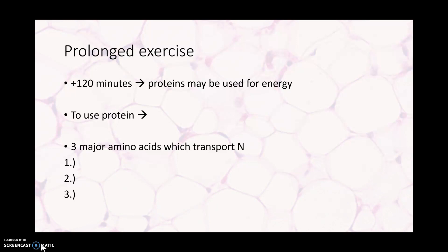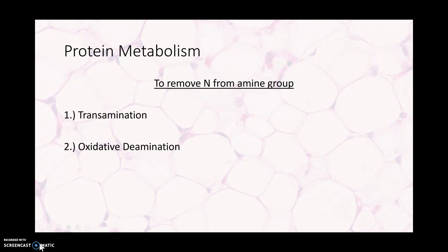In order to use protein as a substrate, the nitrogen must first be removed. The three major amino acids that transport nitrogen are glutamine, glutamate, and alanine. Cortisol also stimulates protein breakdown. The amino acid will be broken down into a carbon skeleton and an amine group containing that nitrogen. We can then use that carbon skeleton for gluconeogenesis if necessary.